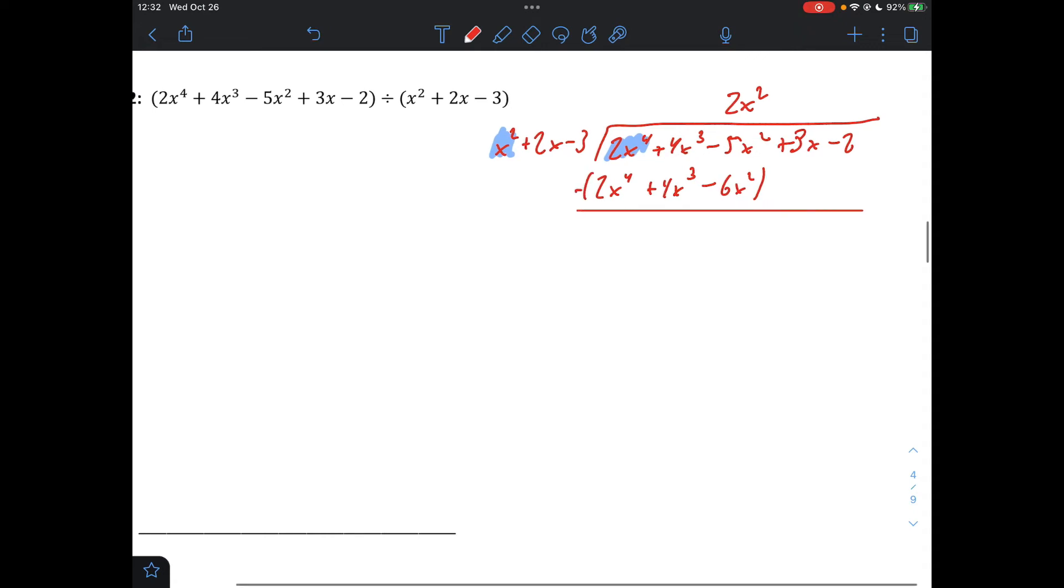And now we'll subtract. The first term should cancel out. If it didn't, you did something wrong. The second term also cancels out here, which is good news. It doesn't have to happen, but it does happen here. And then we've got negative 5 minus negative 6. So negative 5 plus 6, which is 1x squared. And bring down everything else. And divide first term into first term. We get 1. Multiply it back down here. Subtract. We get x and then negative 2 plus 3 plus 1.